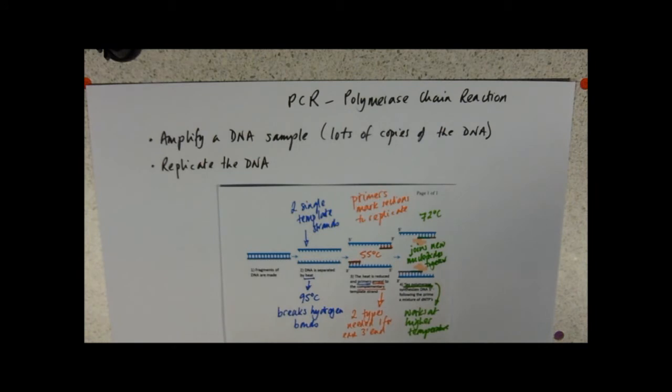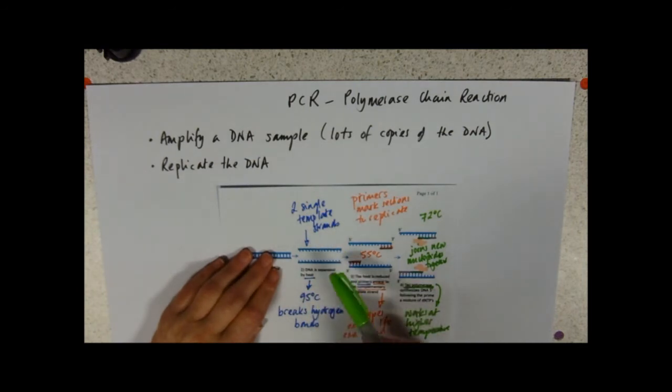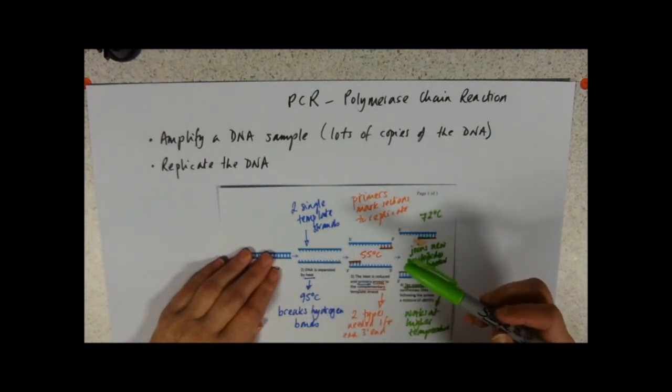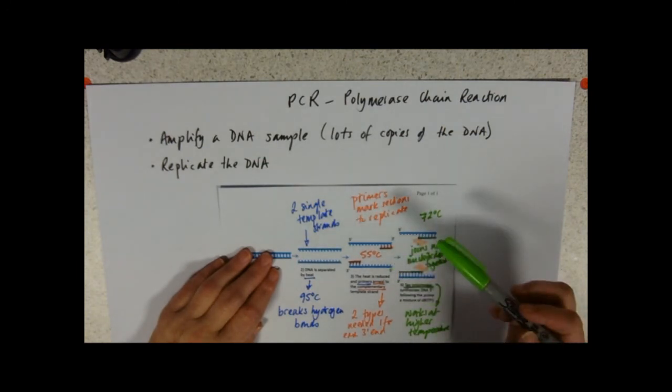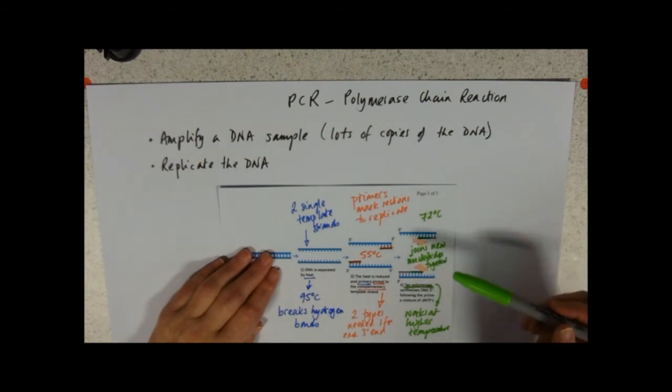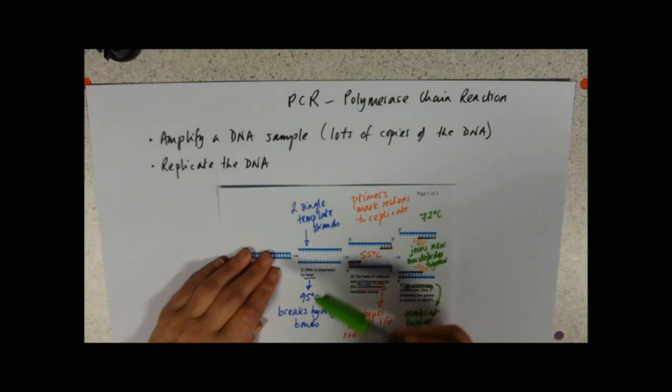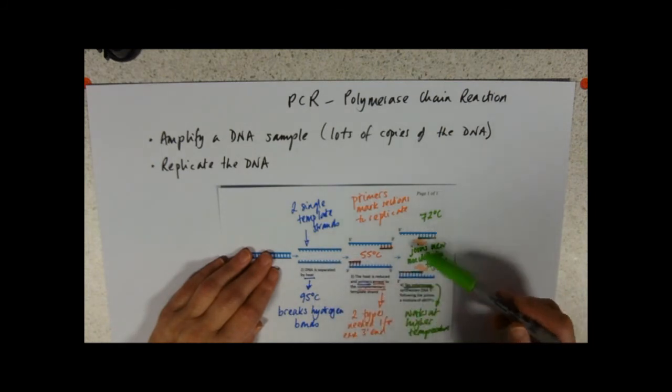So we replicate the DNA. You separate your two strands. You cool it down. Add in your primers. Your primers anneal. They mark the section to be copied. Raise the temperature. Add in your TAC polymerase. Some new nucleotides. And the DNA replicates. And now we've got two identical strands.